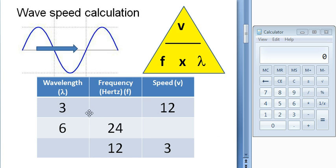We need to fill in the missing values. The first one we have the wavelength lambda at 3 meters, we have a speed v which is 12 meters per second, and we've been asked to work out frequency f in Hertz.